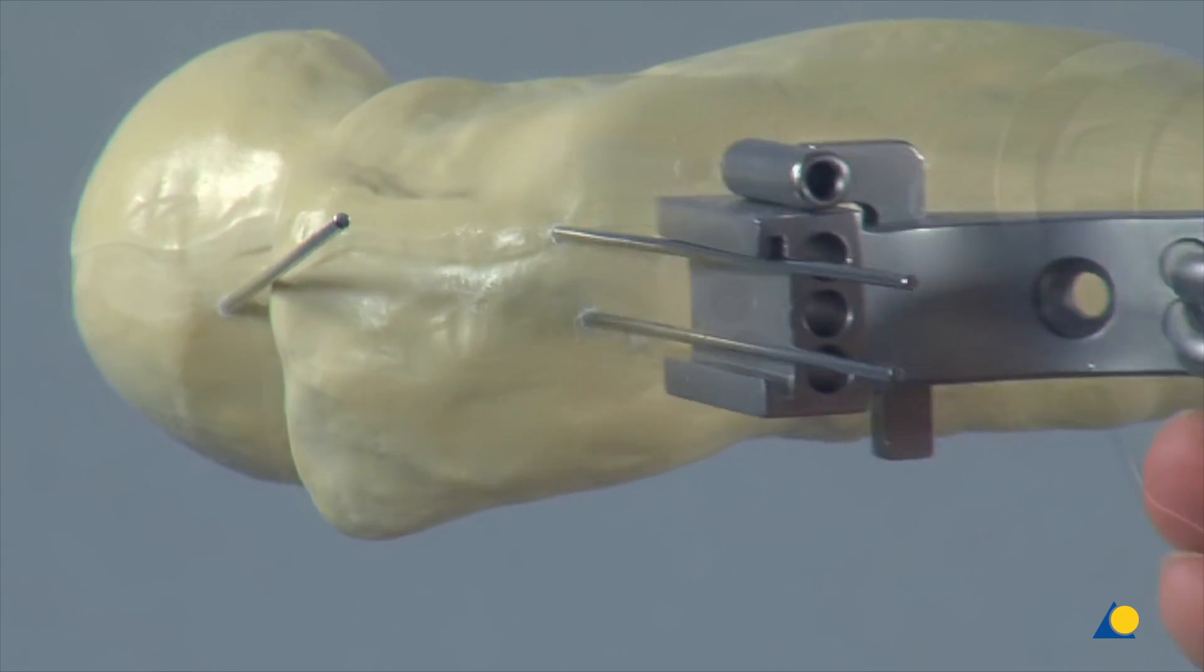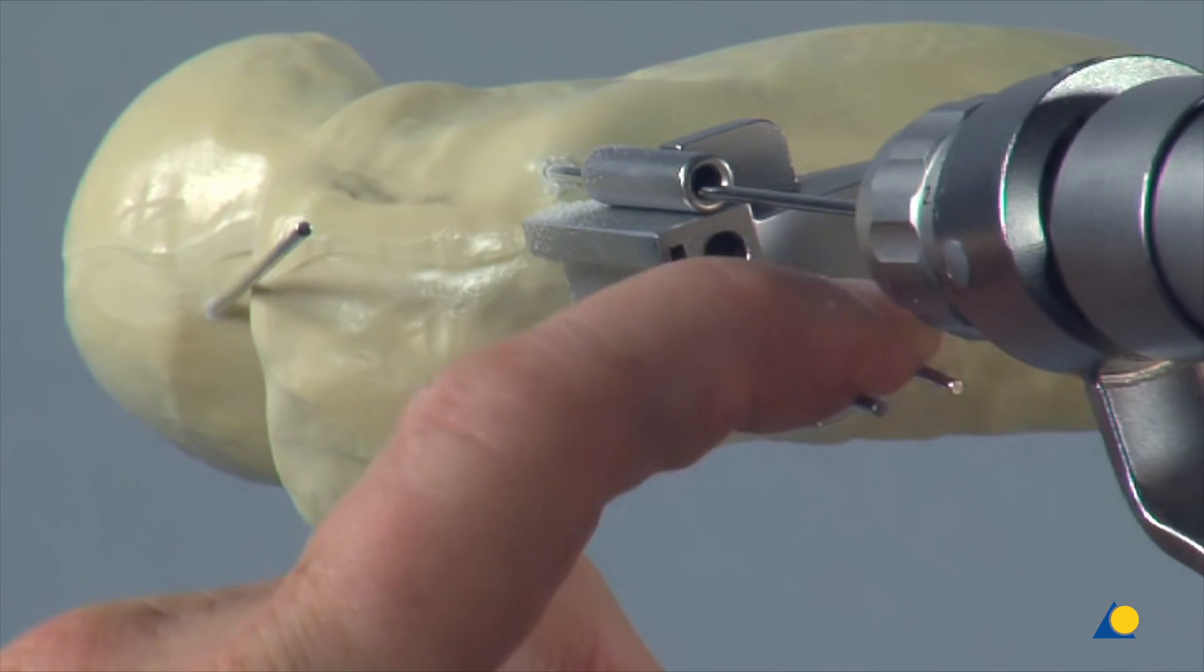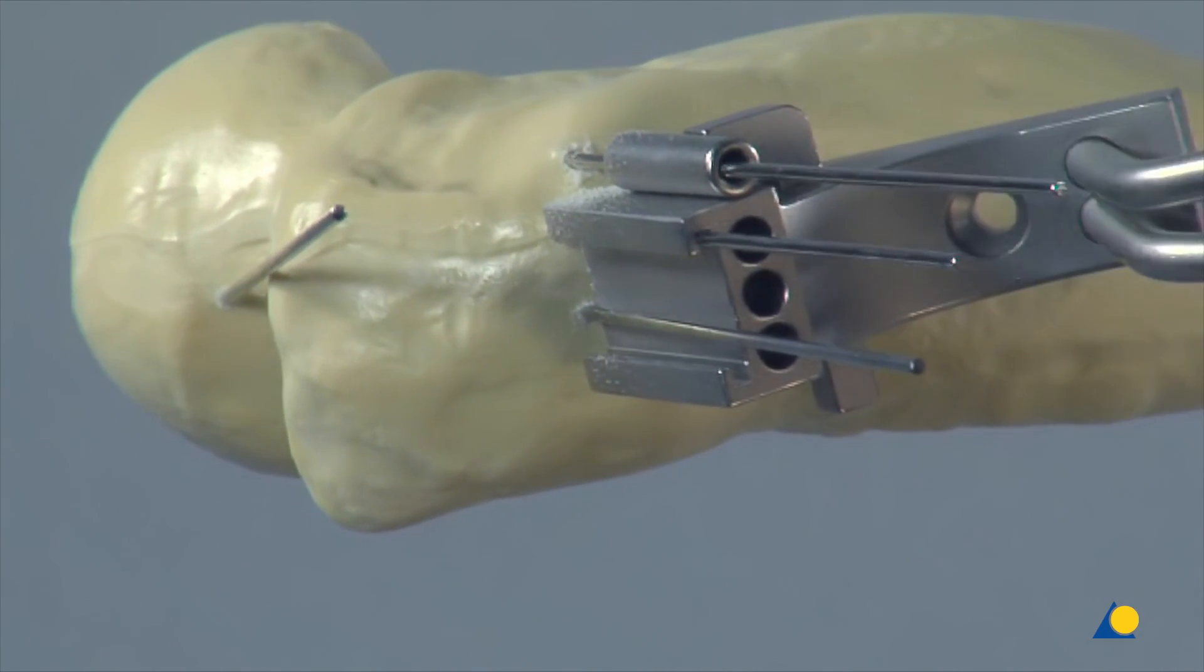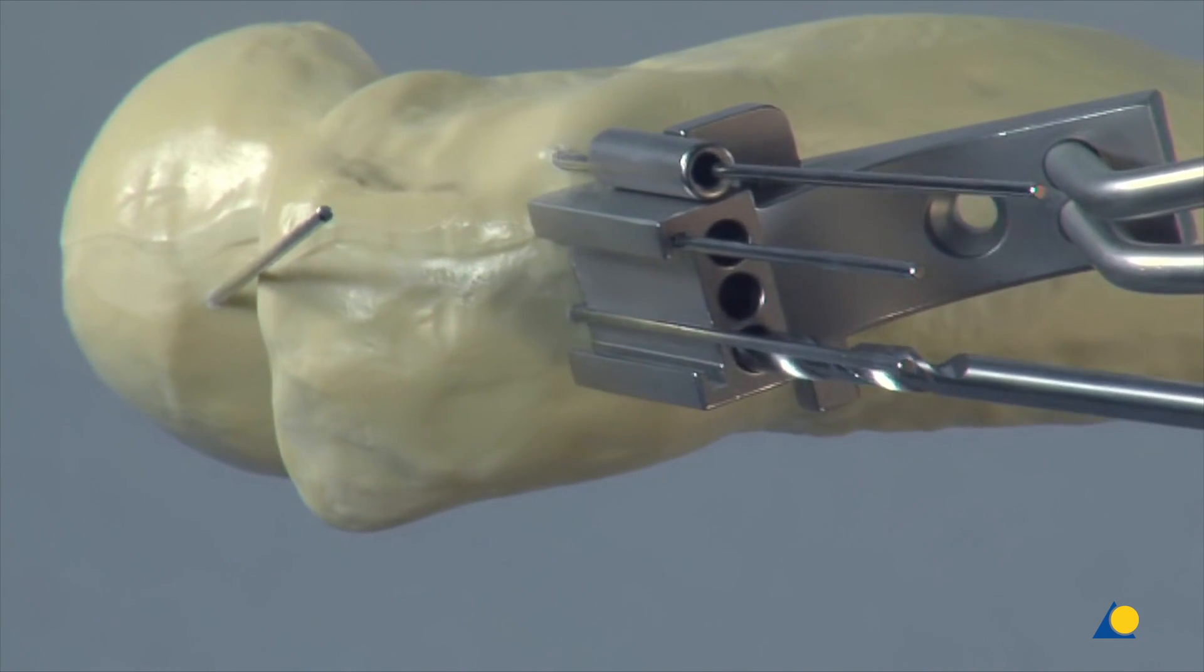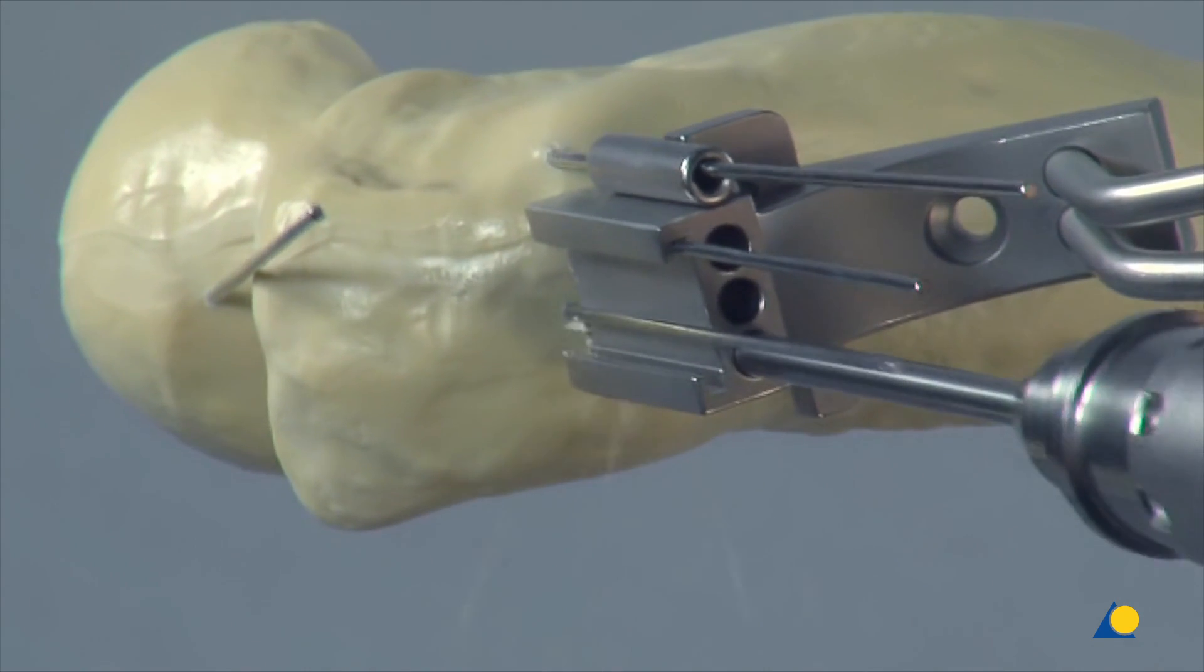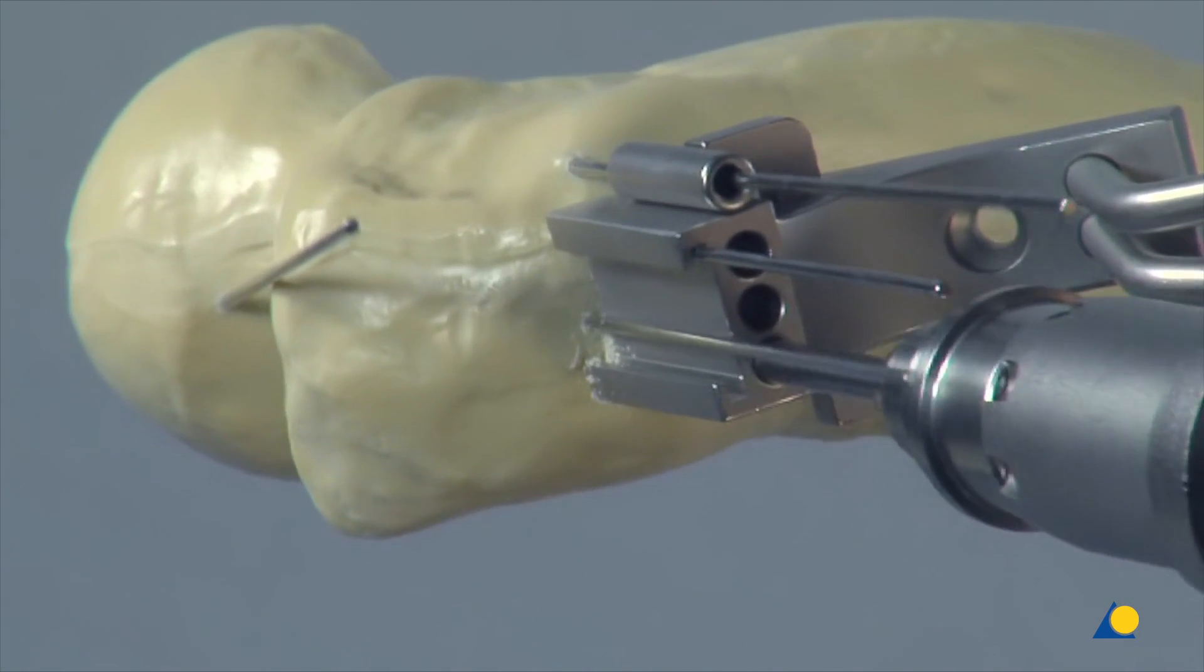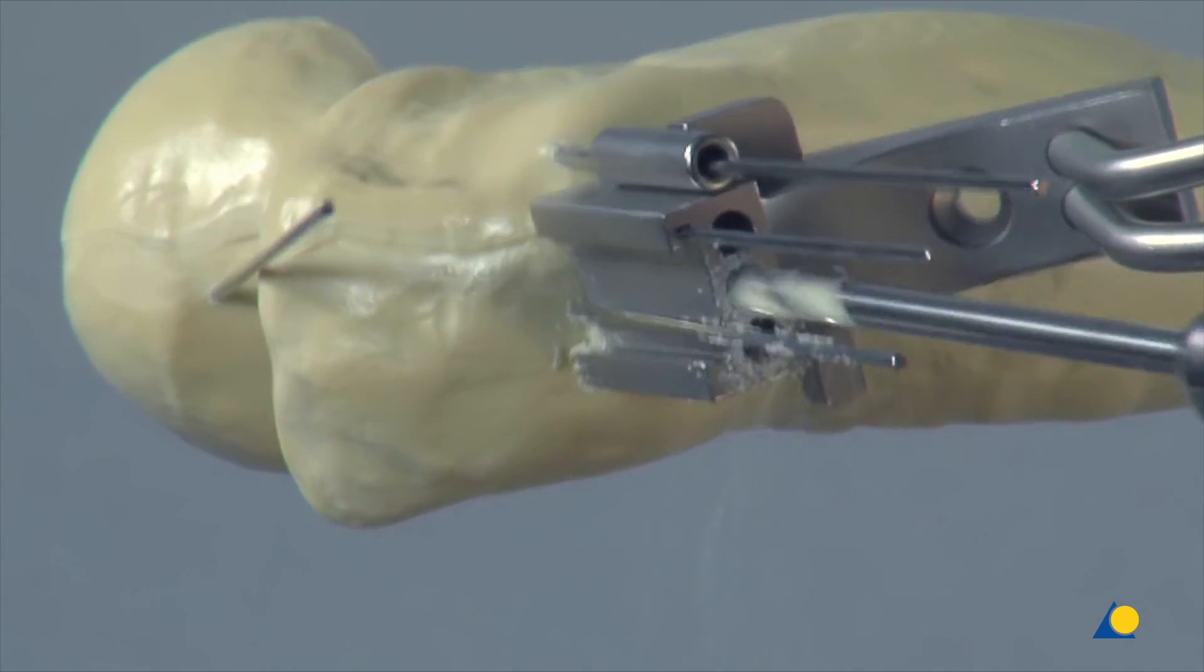The 130 degree triple drill guide is slid down the second and third K-wires and secured with an additional K-wire. The lateral cortex is perforated with a 4.5 millimetre drill bit to a depth of 60 millimetres. Be careful not to penetrate the femoral neck.